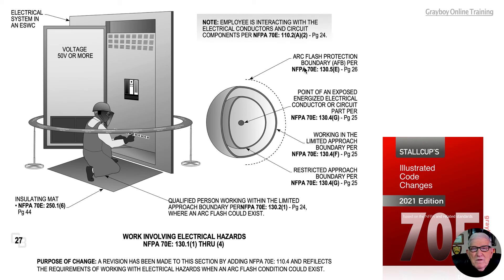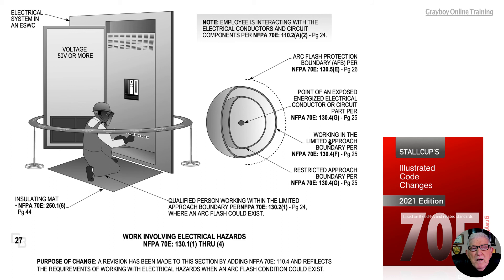As stated previously, 70E 130.5E on page 26: when you're crossing that arc flash boundary, you need your PPE on to protect you for the particular job task. The limited approach boundary seen here in 130.4F is where you want to watch for shock, making sure you're protected from shock conditions.